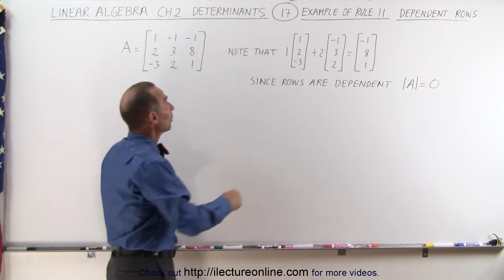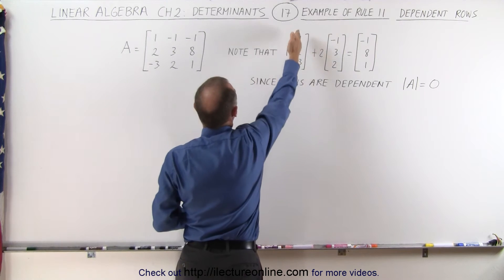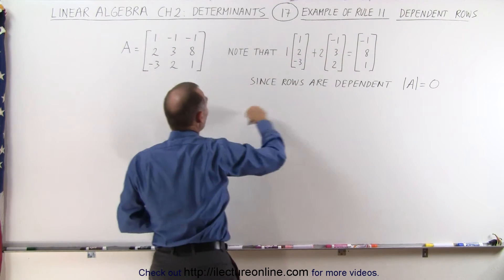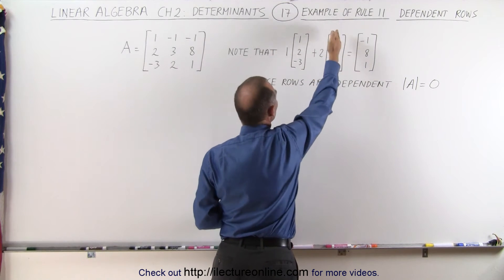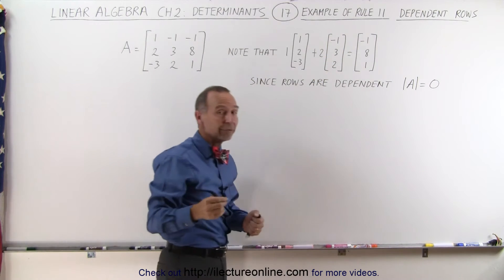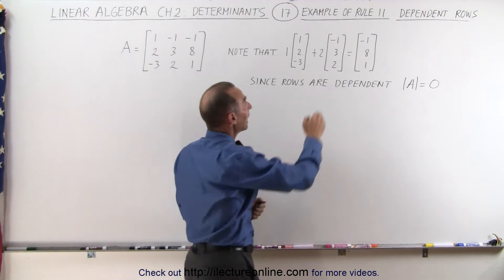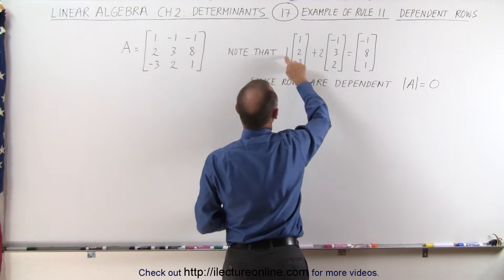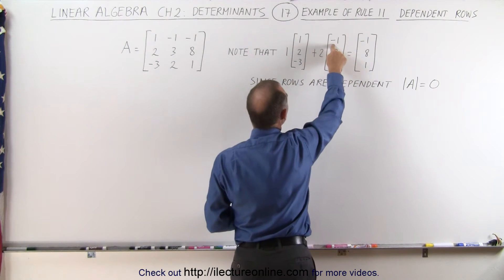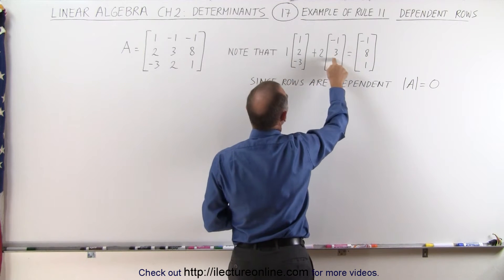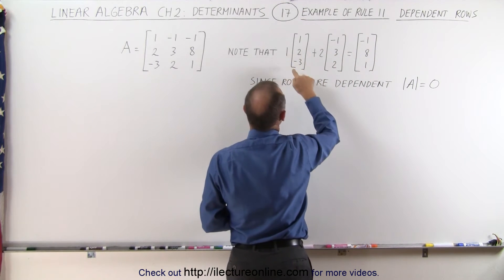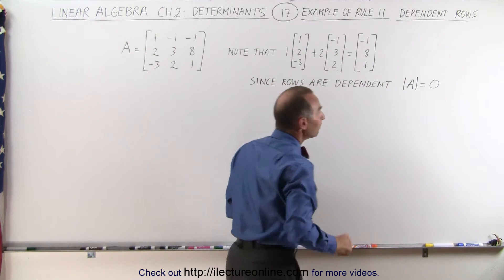Here's an example. We take the number 1 and multiply times the elements of the first column, we add to that the product of the number 2 times the elements of the second column, and they sure enough indeed equal the elements of the third column. 1 times 1 plus 2 times negative 1 equals negative 1, 1 times 2 plus 2 times 3 equals 8, and 1 times negative 3 plus 2 times 2 equals a positive 1.